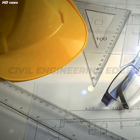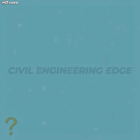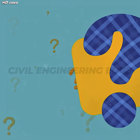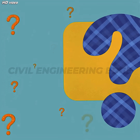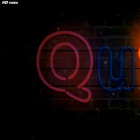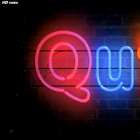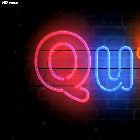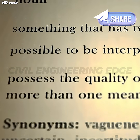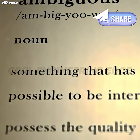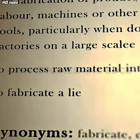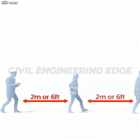Welcome back to Civil Engineering Edge. Today's episode is inspired by a great question from one of you: what's the difference between cement and concrete? If you've ever heard someone say 'cement sidewalk' or 'concrete wall' and wondered if they're the same thing, you're not alone. These two terms are often used interchangeably, but they're not the same. In fact, one is just a key ingredient in the other. So what exactly is the difference?